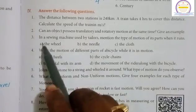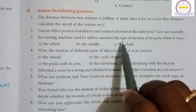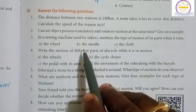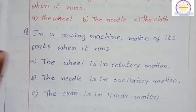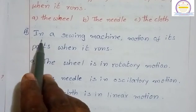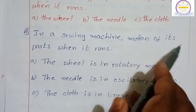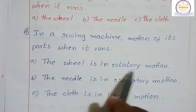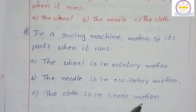Third question: In a sewing machine used by a tailor, mention the type of motion of its parts when it runs: a) the wheel, b) the needle, c) the cloth. The wheel is in rotatory motion. The needle is in oscillatory motion. The cloth is in linear motion.